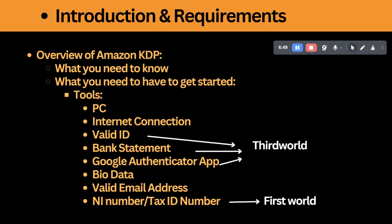If you are a resident in a first-world country, before your account can be fully set up, you need to integrate it with your tax information. That is why you will need your NI number or tax ID number, depending on what it is called in your country. These are the basic tools needed to set up the accounts required for publishing your books. I'll see you in the next module where we cover setting up the accounts.